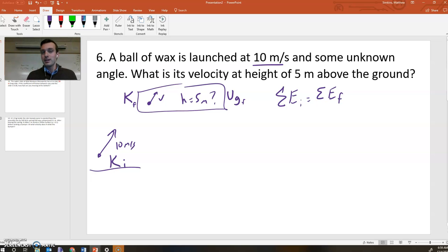That is the idea that the total energy in a system at one point must equal the total energy of a system at another point. Unless, of course, there's work done by a non-conservative force, which there isn't here. And so we have to write our energy expression. What we can say is that the initial K is equal to the final K plus the UG final.